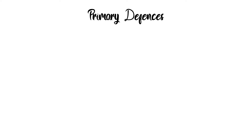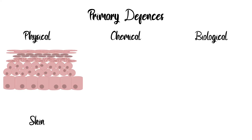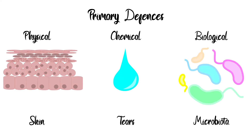The body has a number of primary defences to prevent pathogens entering the body. These can be grouped into physical, chemical, and biological. For example, we have tight junctions in the skin, lysozymes in tears, and the normal microbiota in the gastrointestinal tract.